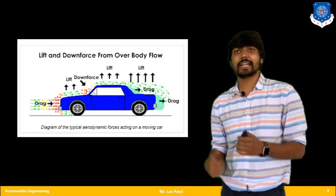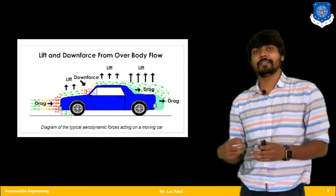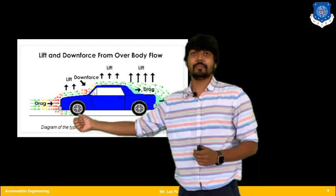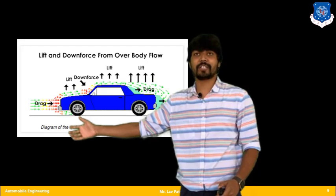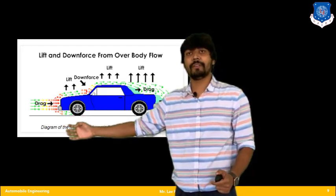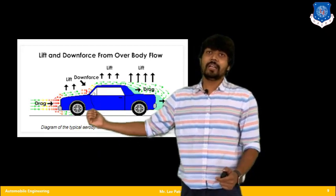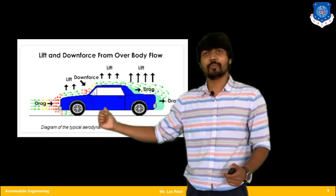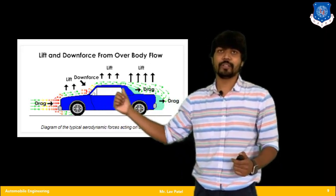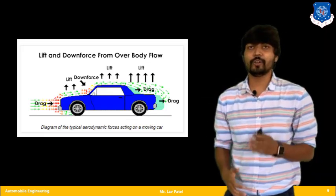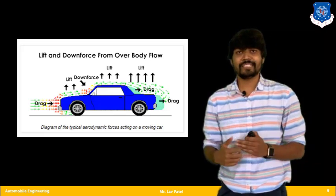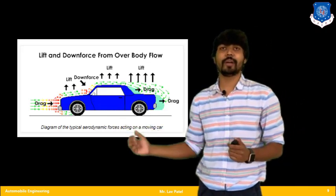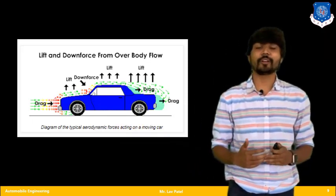Moving further, let us see how lift and downforce are generated as air flows over a body. At the frontal portion, which is not aerodynamically perfect in shape, you find maximum air pressure and therefore maximum drag. The lift force depends on the pressure difference. At the windshield and cowl portion you find downforce, while at the roof portion you find different lifts. We must balance downforce, lift, and drag to maximize vehicle speed without lifting the vehicle.